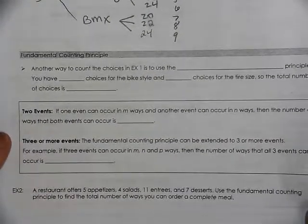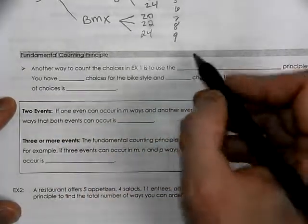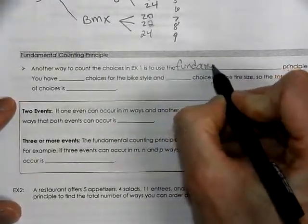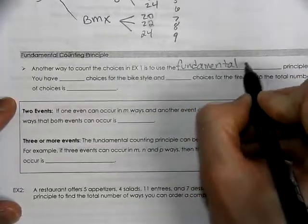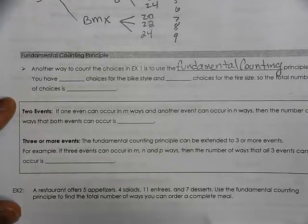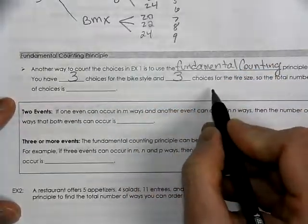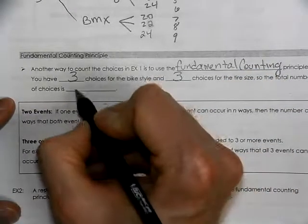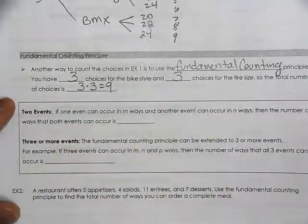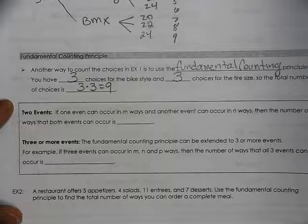Next, we have the fundamental counting principle — another way to count. In this case, we have three choices for the type of bike and three choices for the size of tires, so you use three times three to show that we have nine possible options in our storyline for example number one.